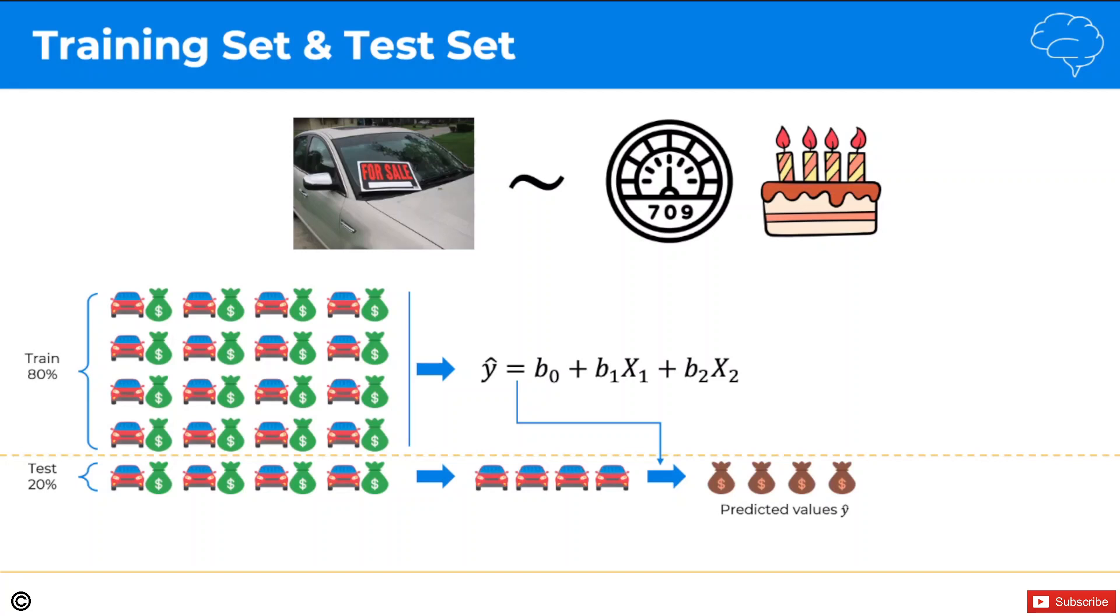But the good news is that because this is something we separated in advance as part of the data that was given to us, we actually know the actual prices. So now we can compare the predicted values, which were generated using a model that has never seen these cars before, and we can compare that to the actual values that we know what these cars sold for.